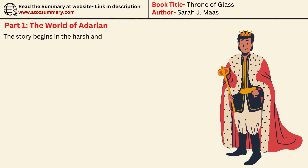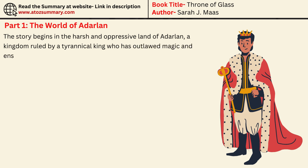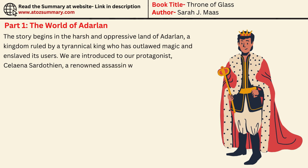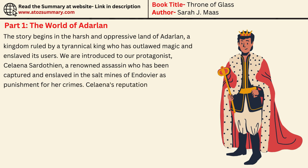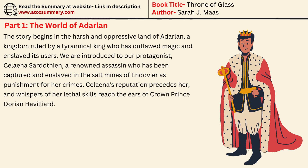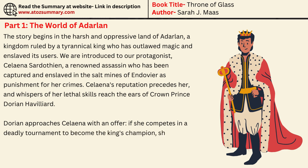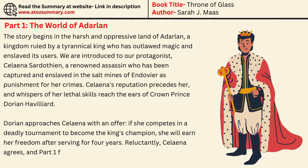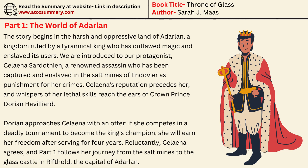In Part 1, the story begins in the harsh and oppressive land of Adarlin, a kingdom ruled by a tyrannical king who has outlawed magic and enslaved its users. We are introduced to our protagonist, Selina Sardothian, a renowned assassin who has been captured and enslaved in the salt mines of Endivir as punishment for her crimes. Selina's reputation precedes her, and whispers of her lethal skills reached the ears of Crown Prince Dorian Havilliard. Dorian approaches Selina with an offer: if she competes in a deadly tournament to become the king's champion, she will earn her freedom after serving for four years. Reluctantly, Selina agrees, and Act 1 follows her journey from the salt mines to the glass castle in Rifthold, the capital of Adarlin.